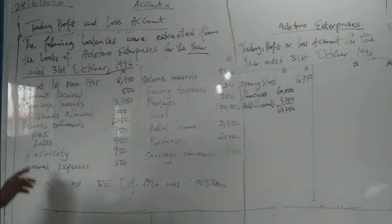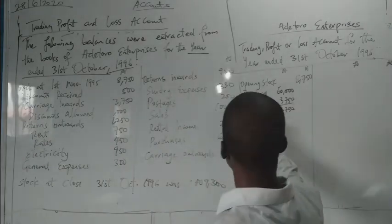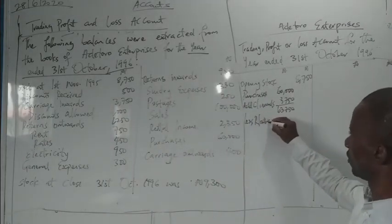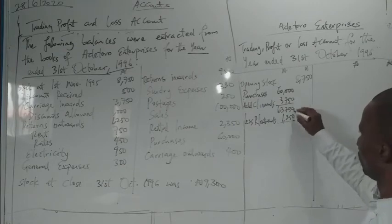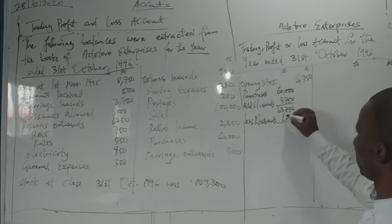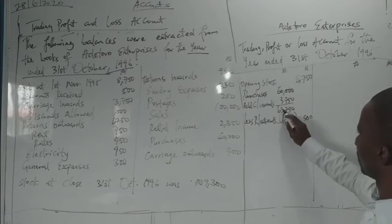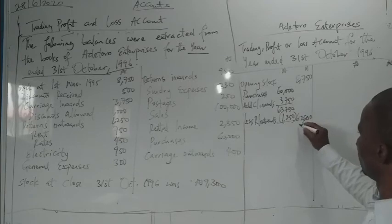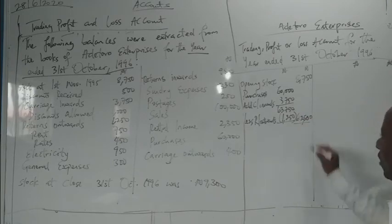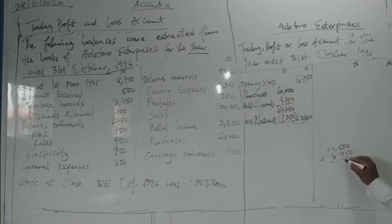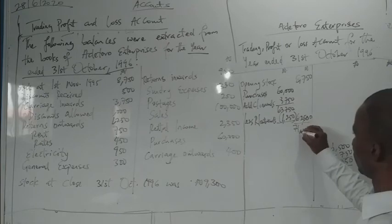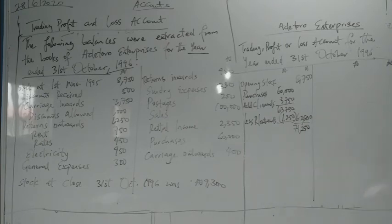The next item is return outwards. We deduct return outwards from purchases and carriage inwards. Return outwards is 1,250. So 63,750 minus 1,250 gives net purchases of 62,500. Adding the opening stock of 8,750 gives 71,250 as goods available for sale.